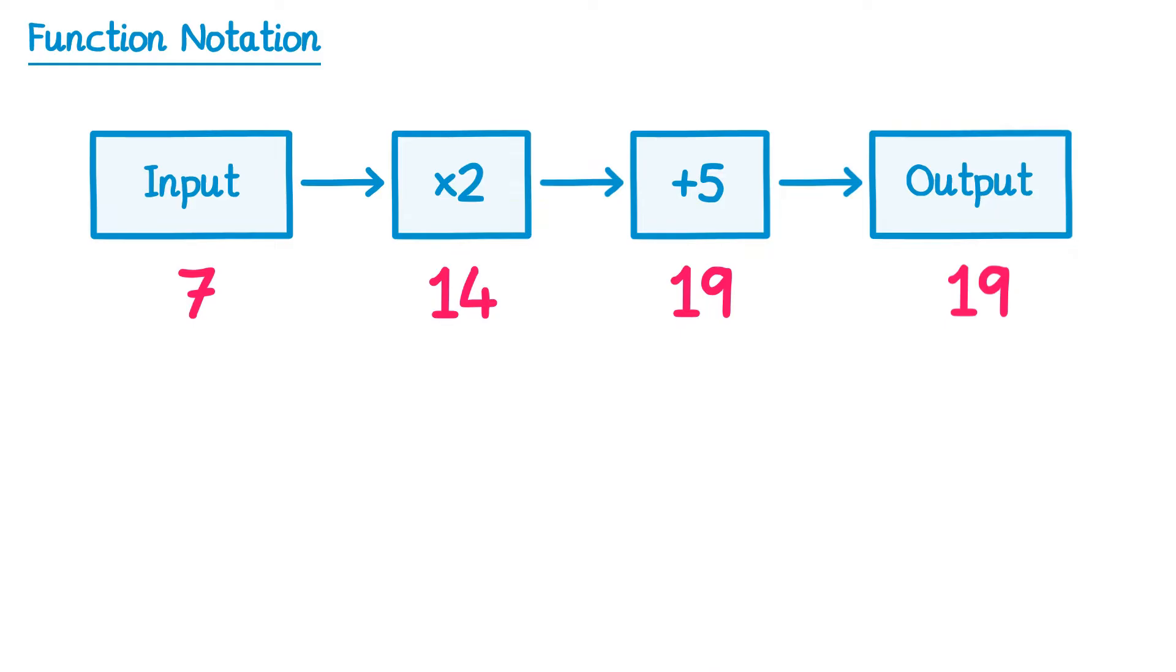So if 7 was the input, 19 is the output. Now what about if our input was algebraic? What if it was x? So if the input is x, you times that by 2 first to get 2x and then you add 5, so 2x plus 5. So when the input is x, the output is 2x plus 5.